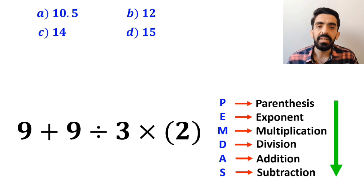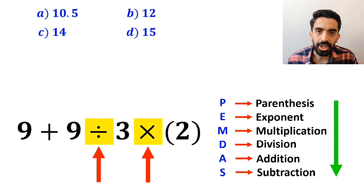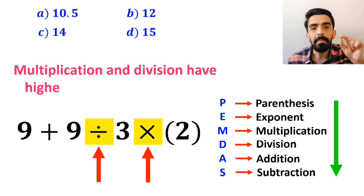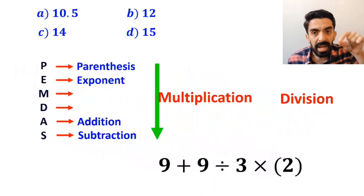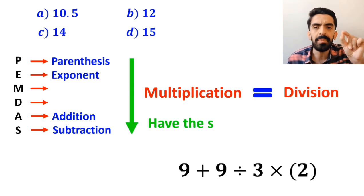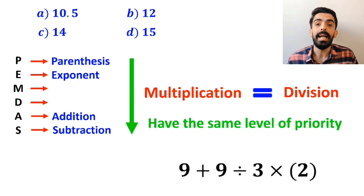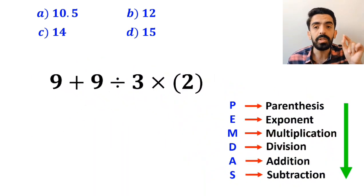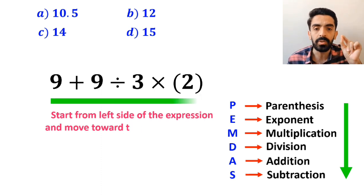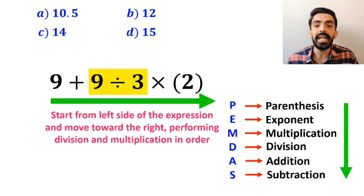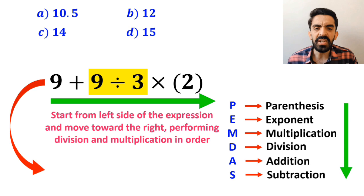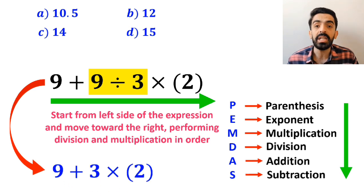In the next step, we need to handle the division and multiplication, because multiplication and division have a higher priority than addition. However, it's very important to note that in the PEMDAS rule, multiplication and division have the same level of priority. In this case, the best thing to do is to start from the left side of the expression and move toward the right, performing division and multiplication in order. So, first we perform the division between 9 and 3, which simplifies the expression to 9 plus 3 times 2.